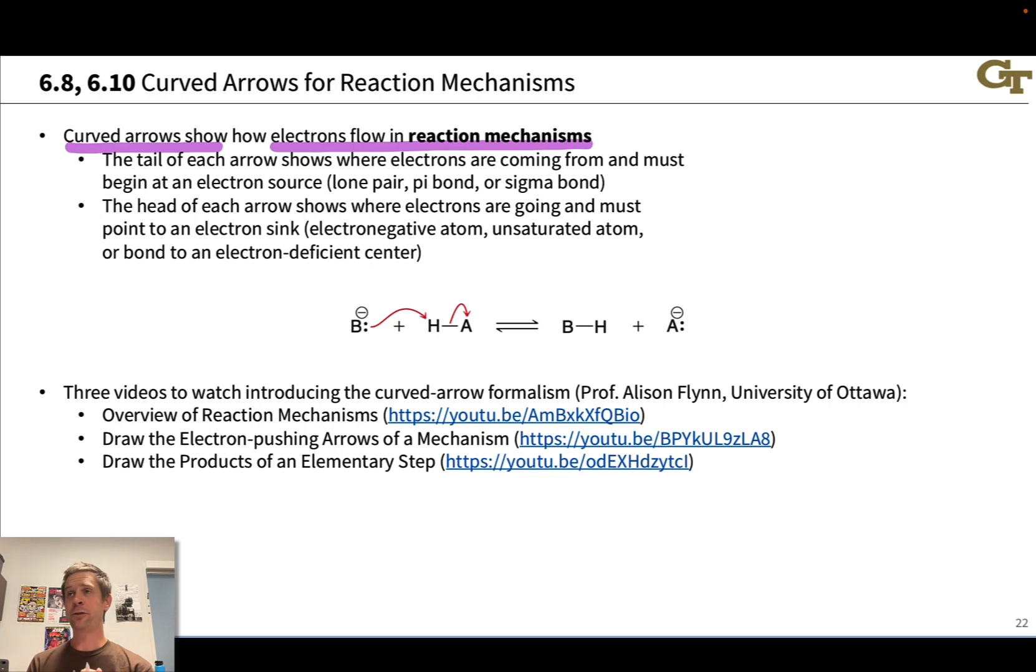Now the first important point about curved arrows to make here is that curved arrows show how electrons flow. What you have to avoid is trying to use an arrow to show the movement of an atom. And we've previously seen curved arrows for proton transfer and this is a good context to begin getting familiar with this idea.